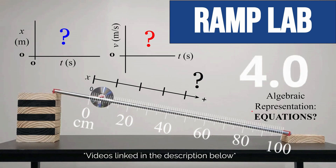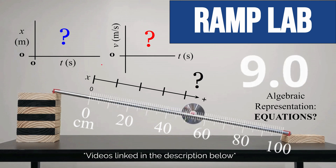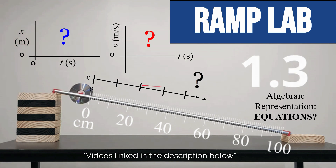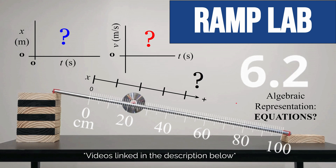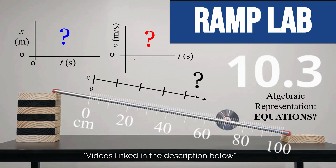In the Ramp Lab, we're trying to figure out how we can represent the motion of something that changes its velocity. How does its position change over time, its velocity change over time? How might we represent that with something called a motion map? And can we come up with algebraic representations or equations for either how position changes, velocity changes, or both?